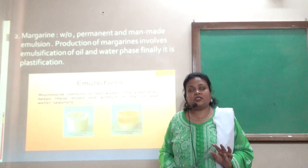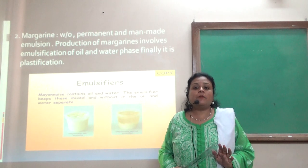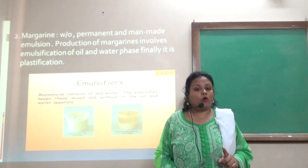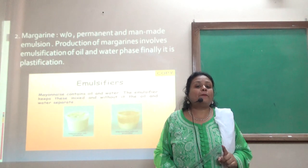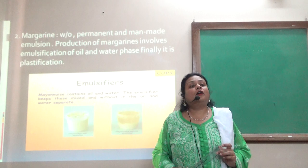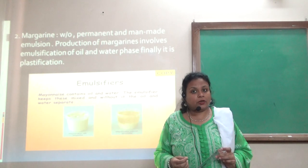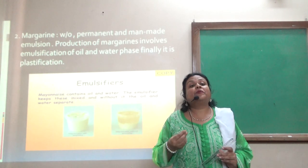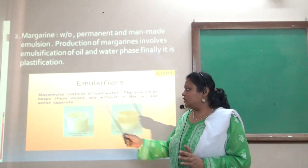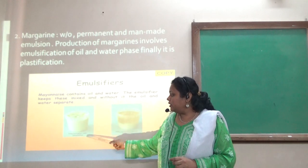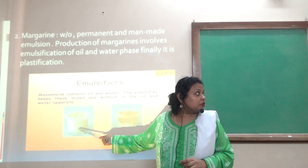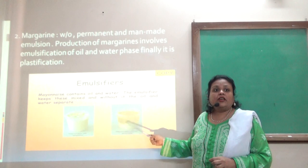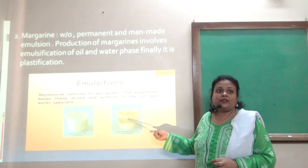The second product is margarine. Margarine is again a water-in-oil emulsion, which is a permanent as well as a man-made or synthetic emulsion. Production of margarine involves emulsification of oil and water phases. Finally, there is plastification — for example, butter in the refrigerator is solid, but if left at room temperature during summer and spread on bread, it spreads very easily. You can see that mayonnaise with an emulsifier becomes a permanent emulsion, whereas mayonnaise without an emulsifier separates into two layers of rich fat and poor fat.